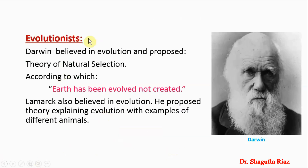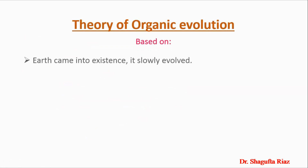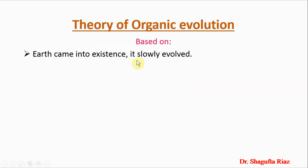The second group is the Evolutionists. Darwin believed in evolution and proposed the theory of Natural Selection, according to which the earth has evolved — not been created — and the present state of the earth has come about by gradual changes. Lamarck also believed in evolution and proposed a theory explaining evolution with examples from different animals.